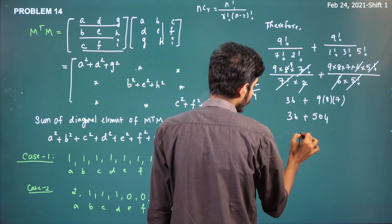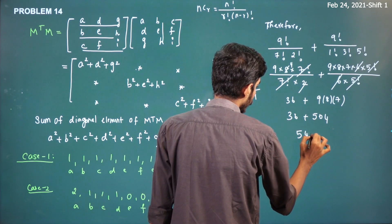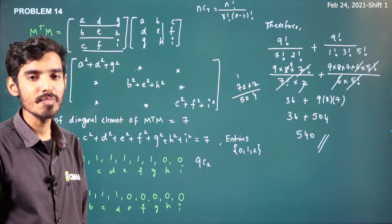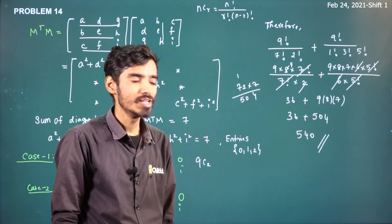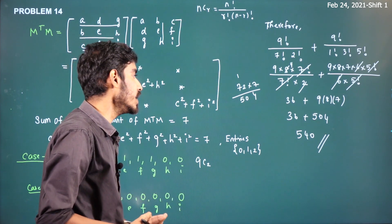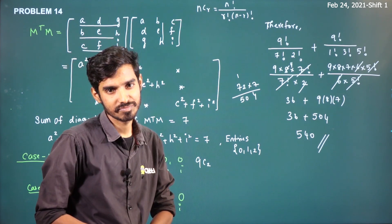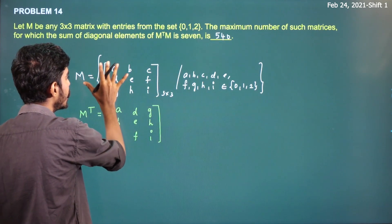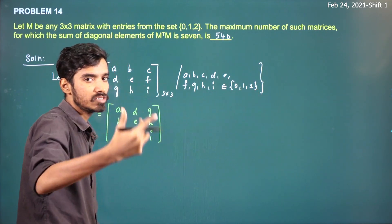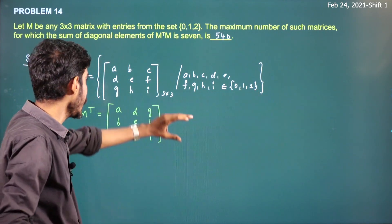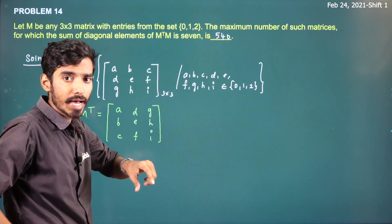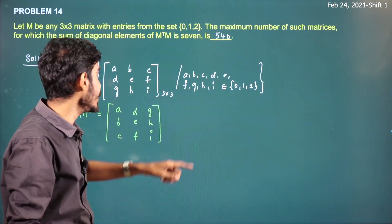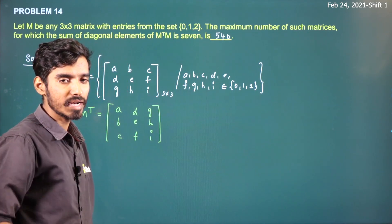Adding the two cases: 36 + 504 = 540 matrices. Therefore, you can form 540 different matrices M with entries from {0, 1, 2} such that the sum of diagonal elements of M transpose M equals 7. The answer is 540.